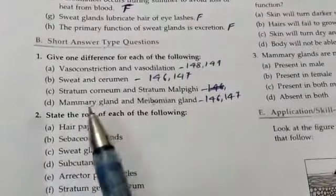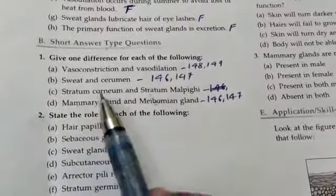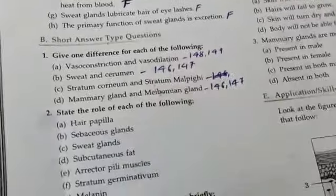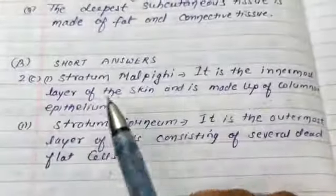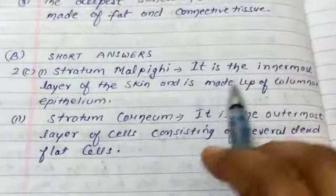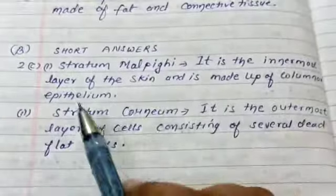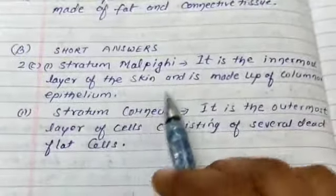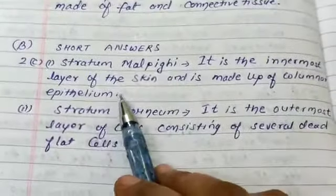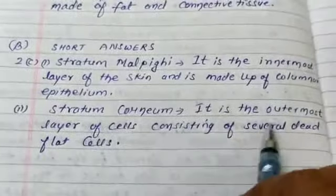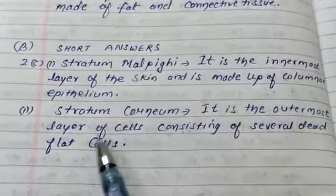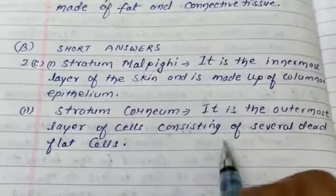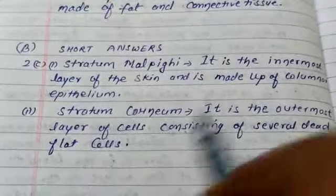Next is C — stratum corneum and stratum malpighii. Stratum malpighii is the innermost layer of the skin and is made up of columnar epithelium. Stratum corneum is the outermost layer of cells, consisting of several dead flat cells.